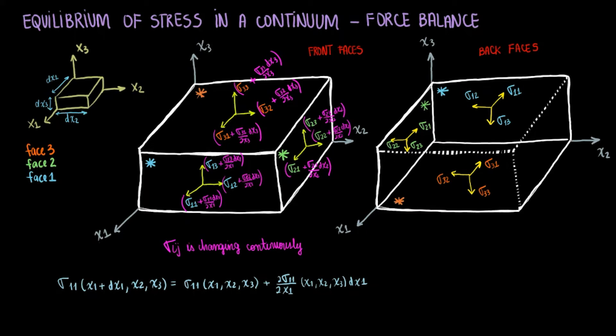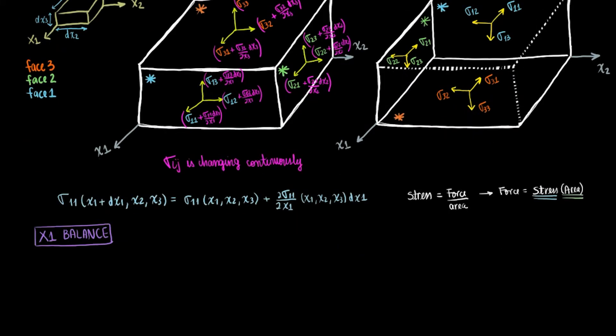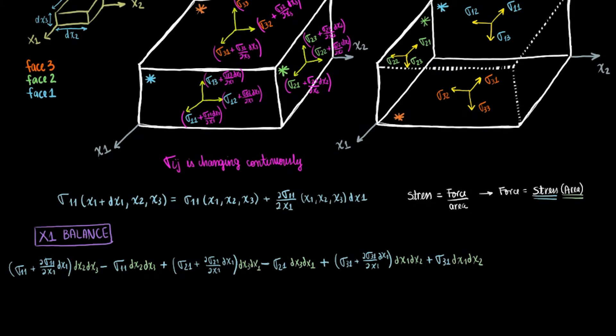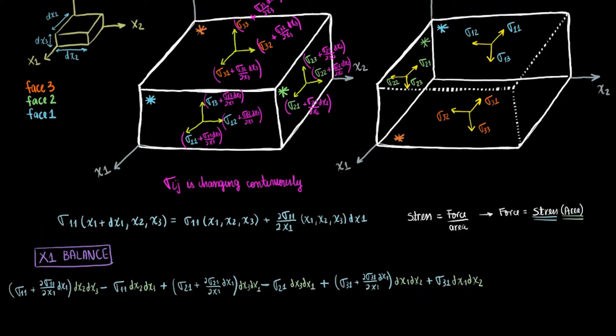To find the x1 force balance, we need to multiply the stress component by the area of the face undergoing that stress. Along x1, this area would be dx2 times dx3. You will take the same approach to do each force balance. Along x1, we need to account for sigma 1 1, sigma 2 1, and sigma 3 1 since these are all the stresses along the x1 direction. Add those stresses up and multiply by the area we decided on.